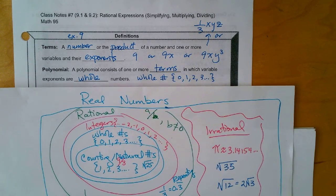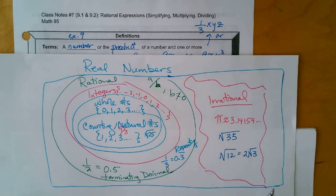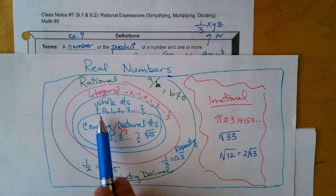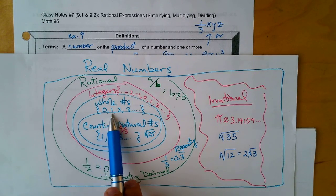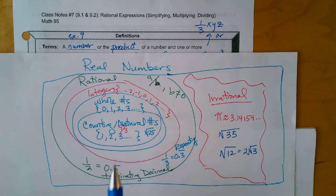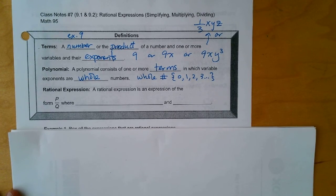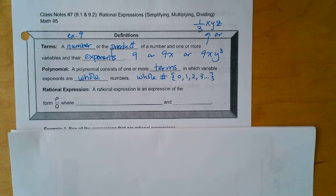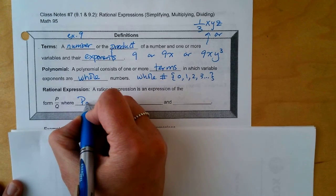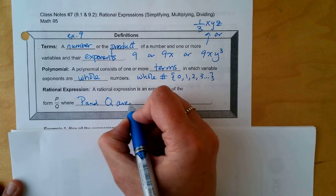When we talked about the real number system before, I pulled out the chart we used. We can see that the whole numbers are within the set of rationals, and the whole numbers contain the counting numbers or natural numbers. A rational expression is an expression of the form P divided by Q, where P and Q are polynomials.